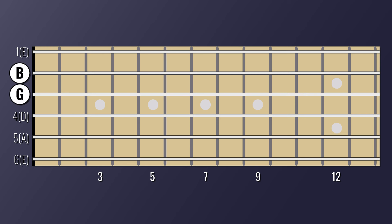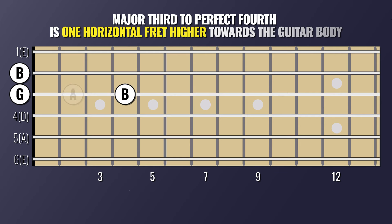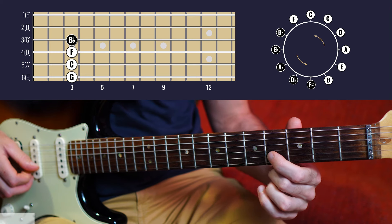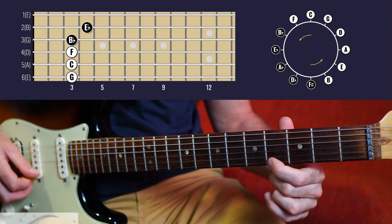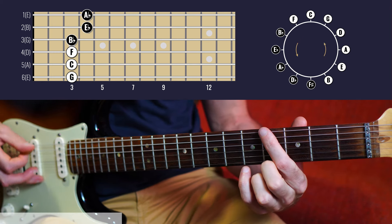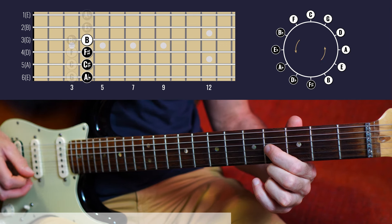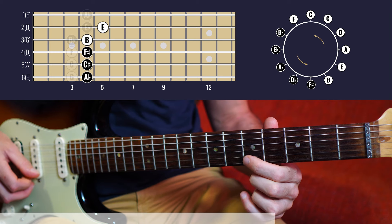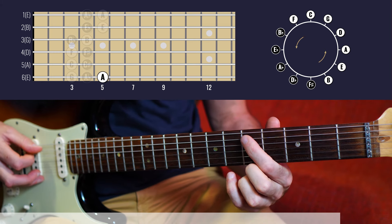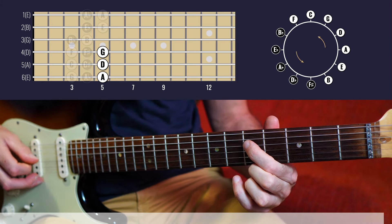But wait, there's a problem. Strings three and two are three alphabet letters — a major third — apart. A major third to a perfect fourth is one horizontal fret higher towards the guitar body. So as you cross strings three and two, you must always raise one fret for the sequence of ascending fourths to be correct. I'll end at A flat/G sharp on the fourth fret, jump back up to string six for that same note two octaves lower, and carry on again across the strings, always raising that one fret on string two. Jump down and continue until I'm back at G on string four at the fifth fret.